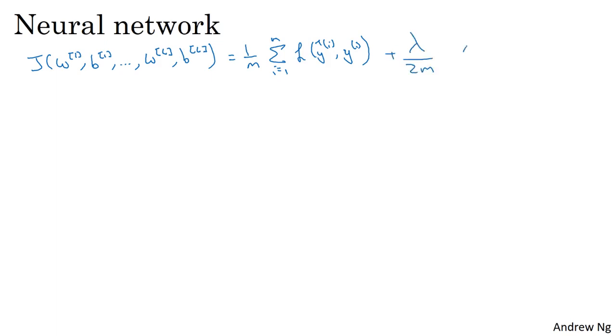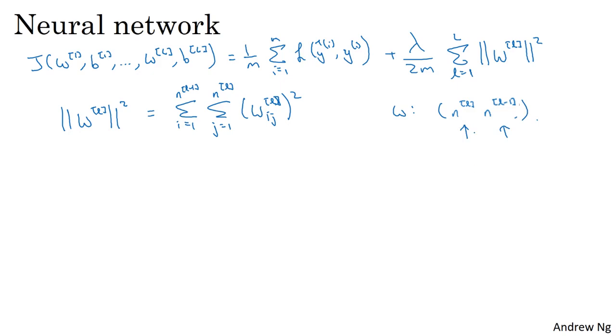And so to add regularization, you add lambda over 2m of sum over all of your parameters W, your parameter matrices W, of their squared norm. Where this norm of a matrix, really the squared norm, is defined as the sum over i, sum over j, of each of the elements of that matrix squared. And if you want the indices of the summation, this is sum from i equals 1 through n^[l-1], sum from j equals 1 through n^[l], because W is an n^[l] by n^[l-1] dimensional matrix, where these are the number of units in layers l-1 and layer l.